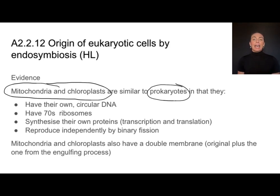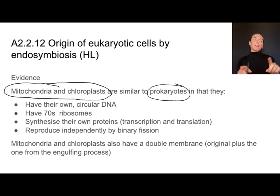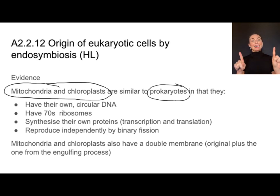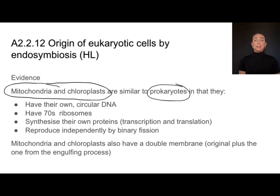The other thing that's really interesting is that mitochondria and chloroplasts both have a double membrane — one membrane from the original prokaryote that they came from and another membrane from that engulfing process. So there's lots of evidence here to support this endosymbiotic theory.